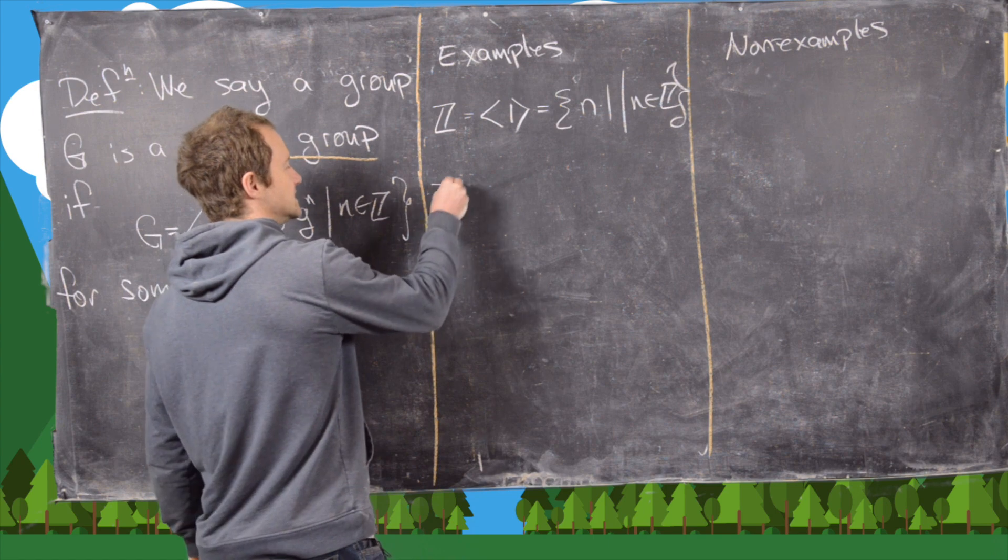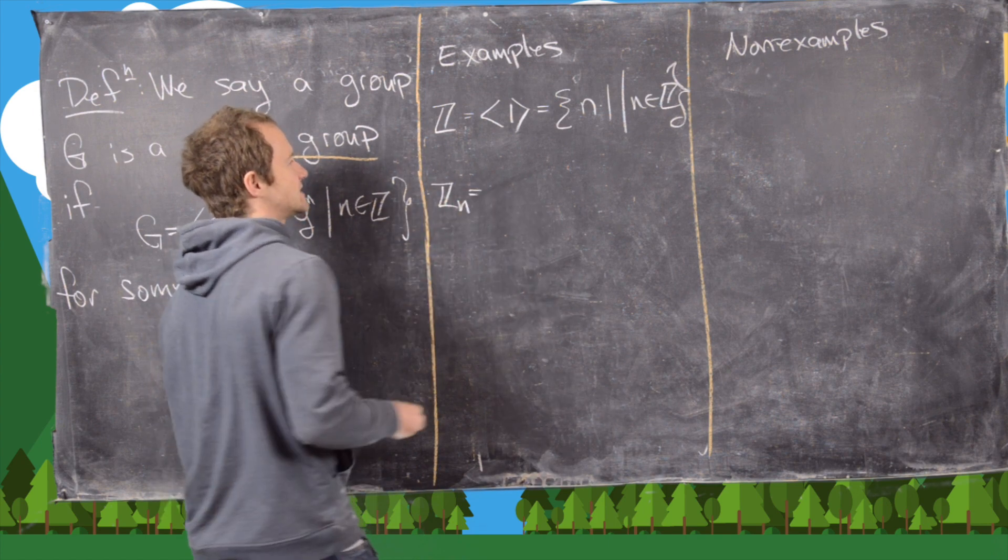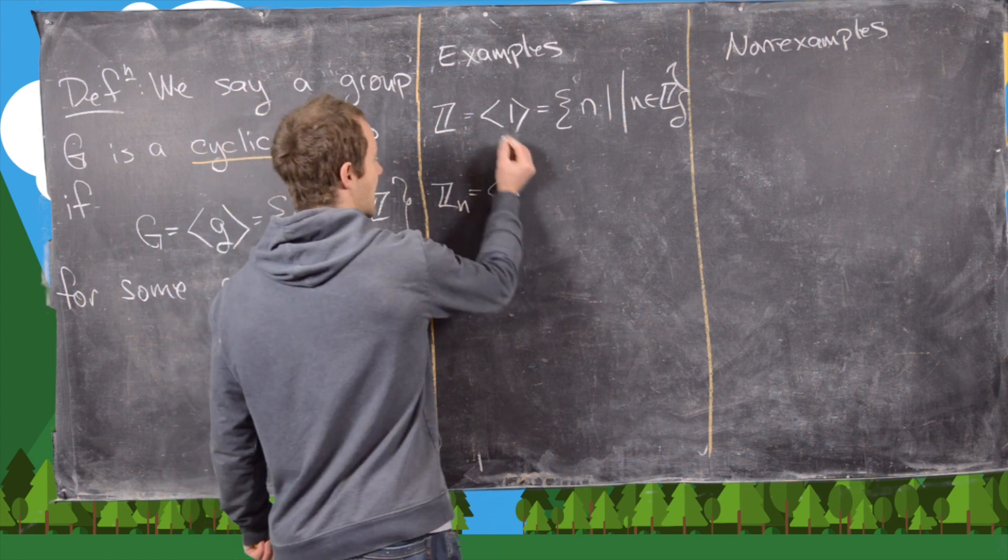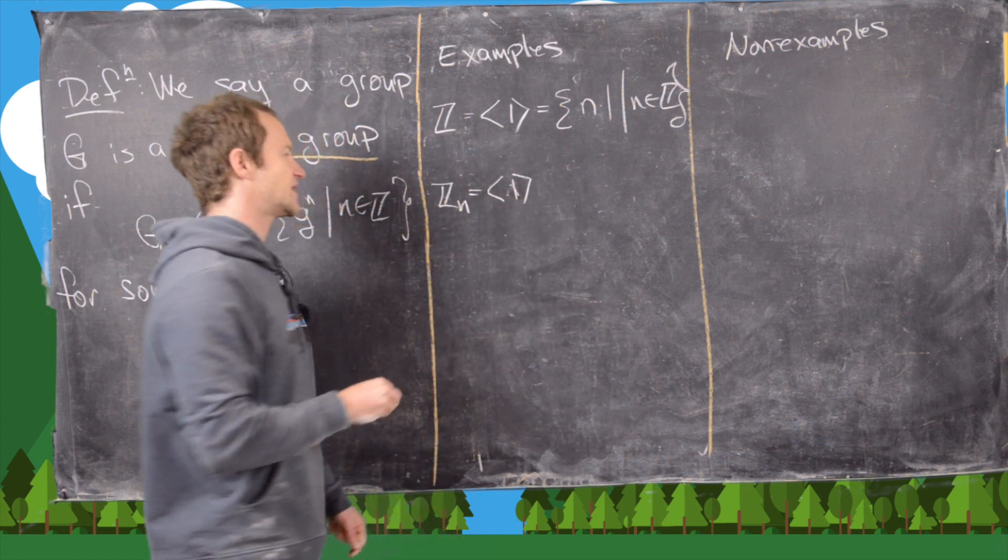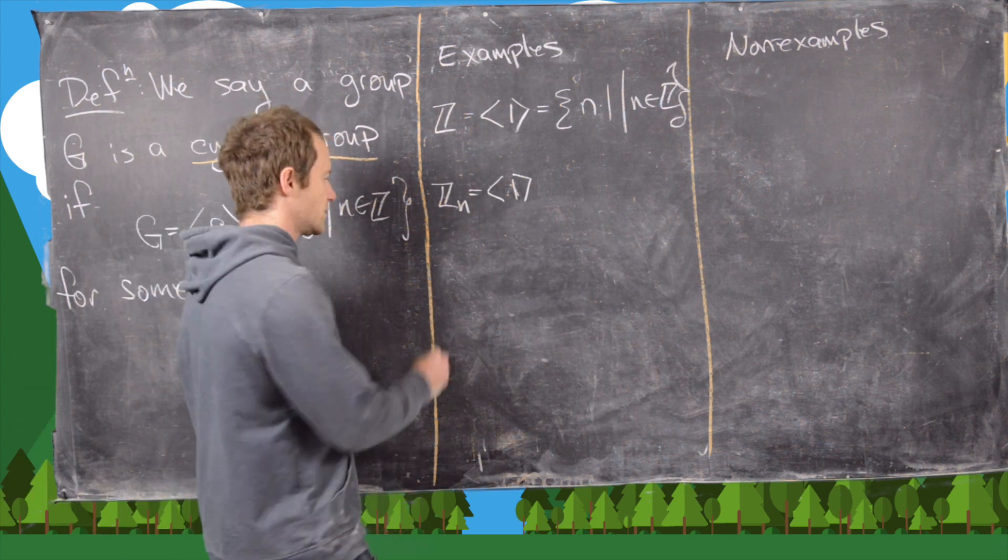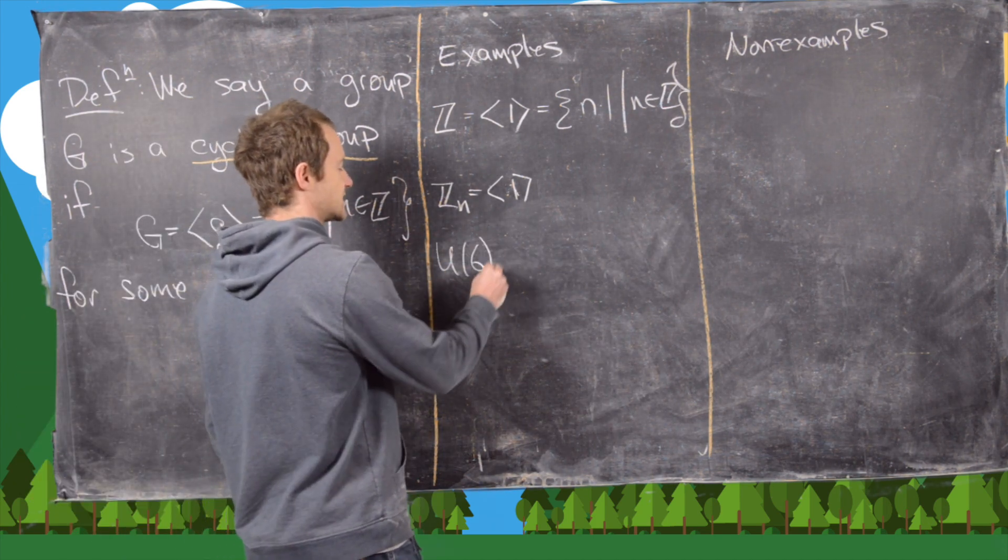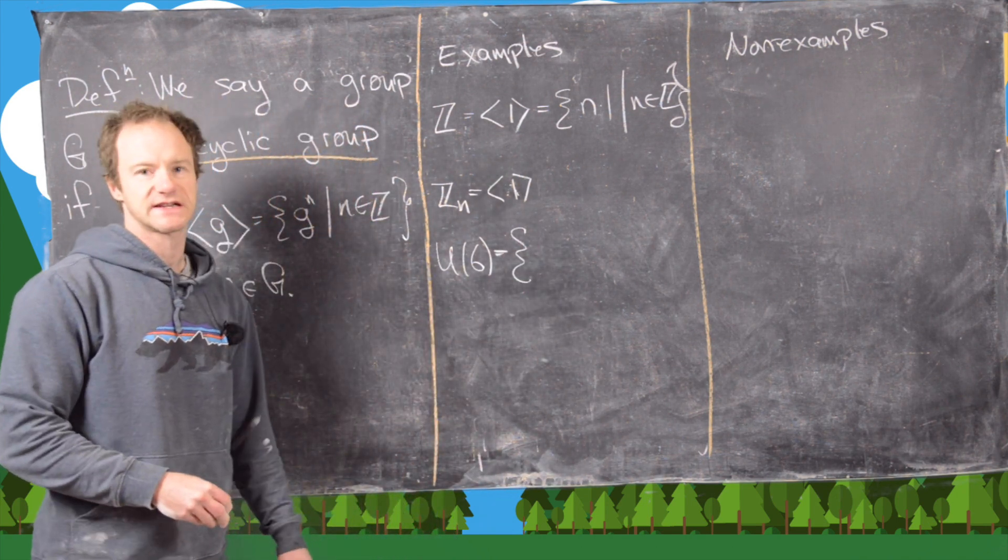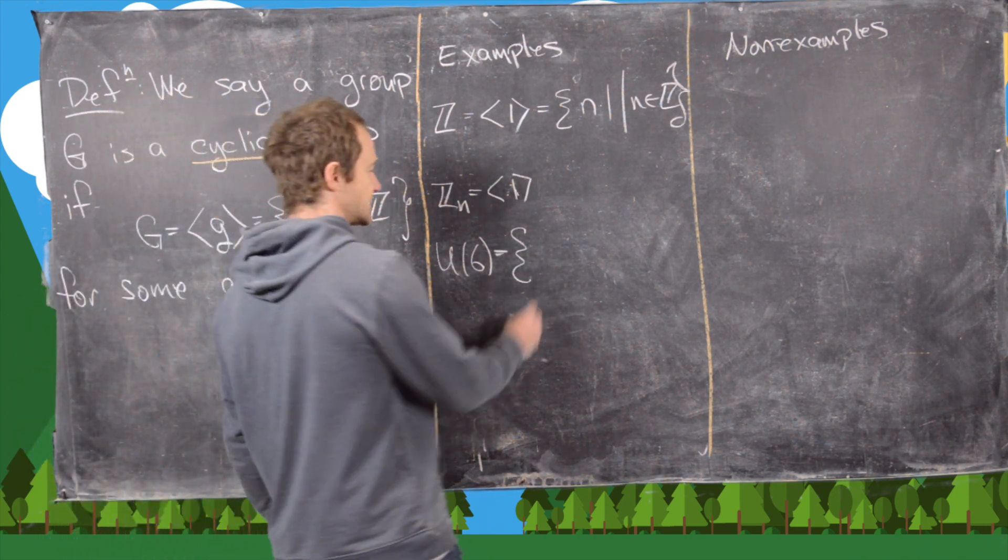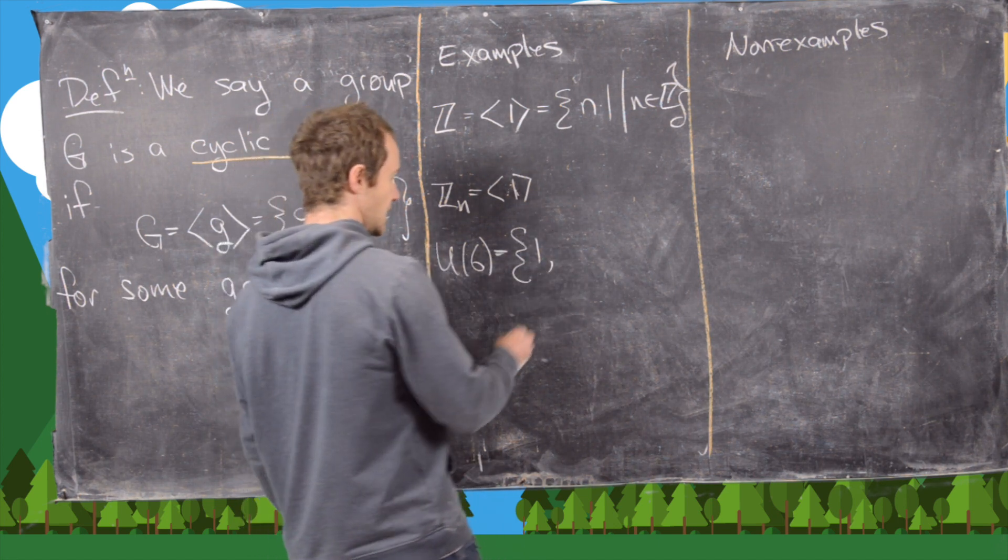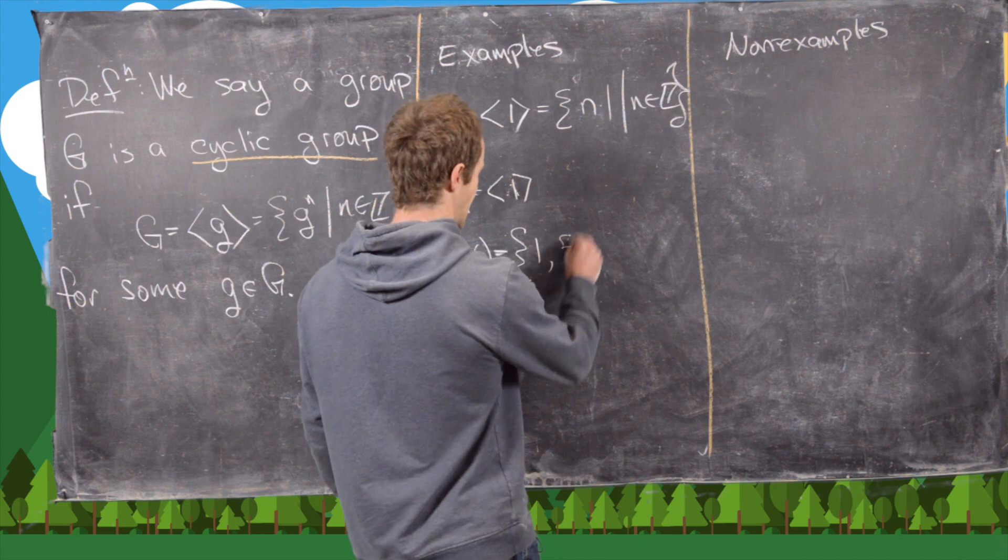Now what about Z_n? Notice that's also going to be a cyclic group and that's also generated by the number one. This actually has some more generators as well which we'll see later. For our next example, let's look at U(6). This is made up of all numbers between one and six that are relatively prime to six. So here we have one, we can't count two or three or four, and then five.